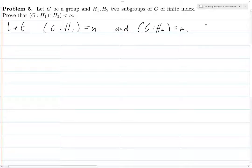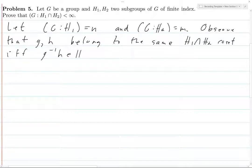Observe that g and h belong to the same H1 intersect H2 coset if and only if g inverse h is in H1 intersect H2. Remember those are equivalent conditions. And this holds if and only if g inverse h is in H1 and g inverse h is in H2. That's just what an intersection is.